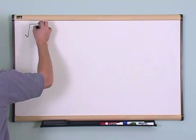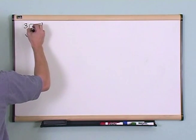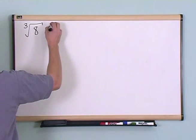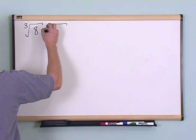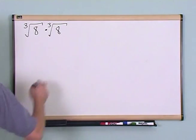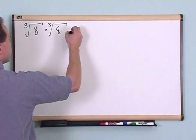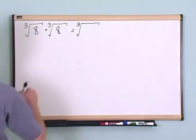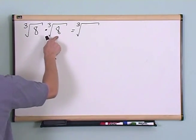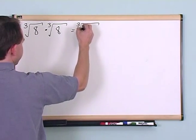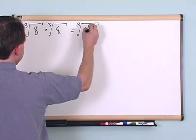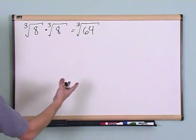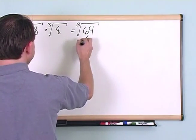What if you had the cubed root of 8 times the cubed root of 8? Just like before, you write down a new symbol — a cubed root. 8 times 8 is 64, so you write that inside the radical. You can't stop here; you need to try to simplify.